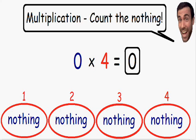So 0 times 4 is equal to 0. 0 times anything is always going to be equal to 0. 0 times 5 is 0, 0 times 6 is 0, 0 times a billion is going to be equal to 0. So I hope this gives you a better idea of what happens when we multiply by the number 0.